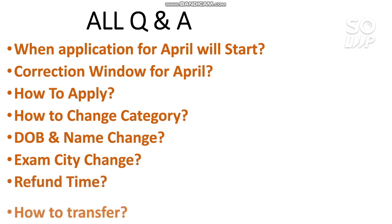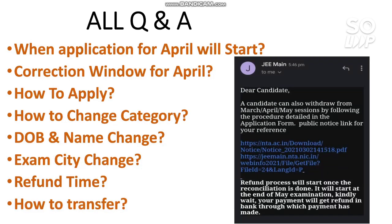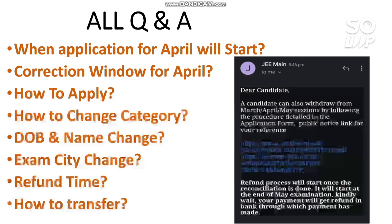Regarding refund timing: here is proof — NTA has sent a mail to students saying the refund will be processed after the May examination. Initially, NTA said students would get refunds after each exam from March onwards, with no refund for the February attempt. But now they are saying the refund will come only after the May attempt. I don't think this is fair to students. I believe NTA is delaying the refund so that more students appear in all exams and they don't have to return as much money — it seems their main aim is to collect more applications and generate more money.